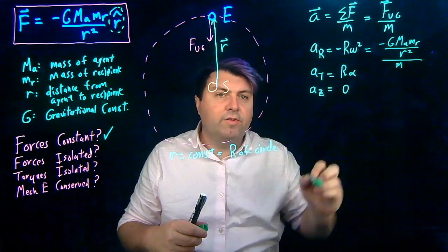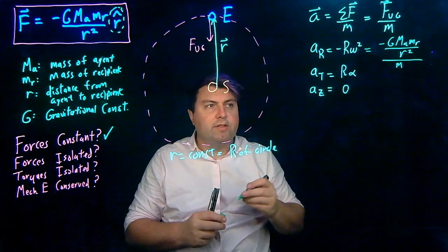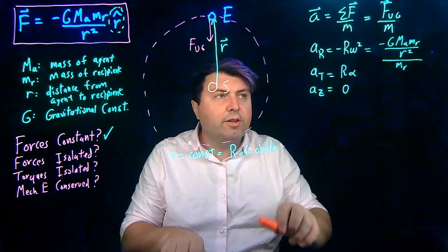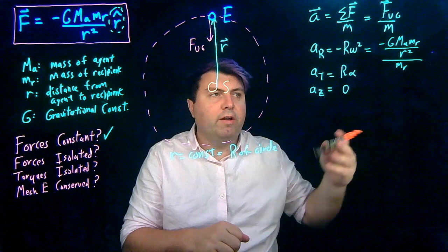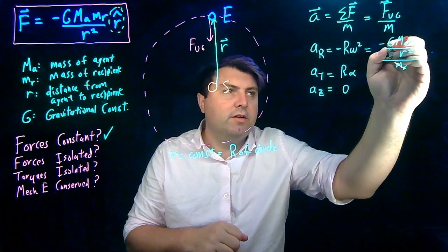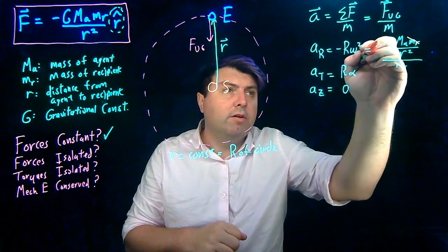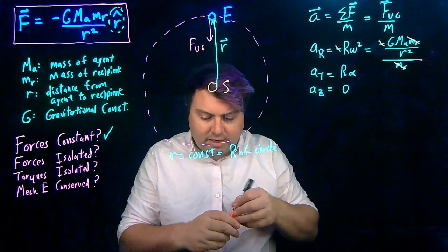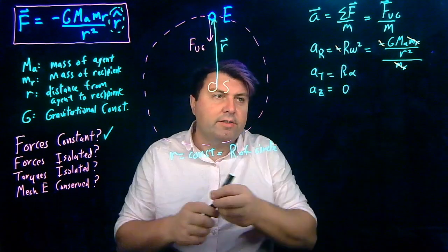So we actually don't have to worry about either of these two, we just have this. And then this mass is the mass of the recipient, so we can do a little bit of cancellation. We can cancel this mass of the recipient here with this mass of the recipient here. We can cancel this negative sign with this negative sign.